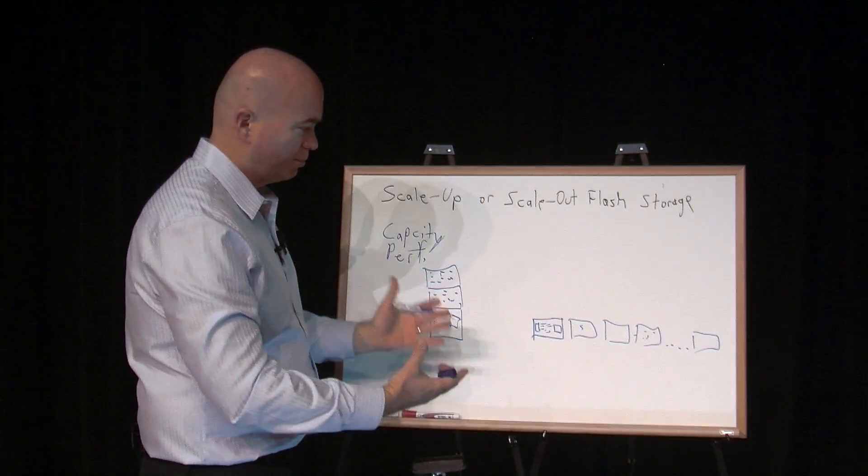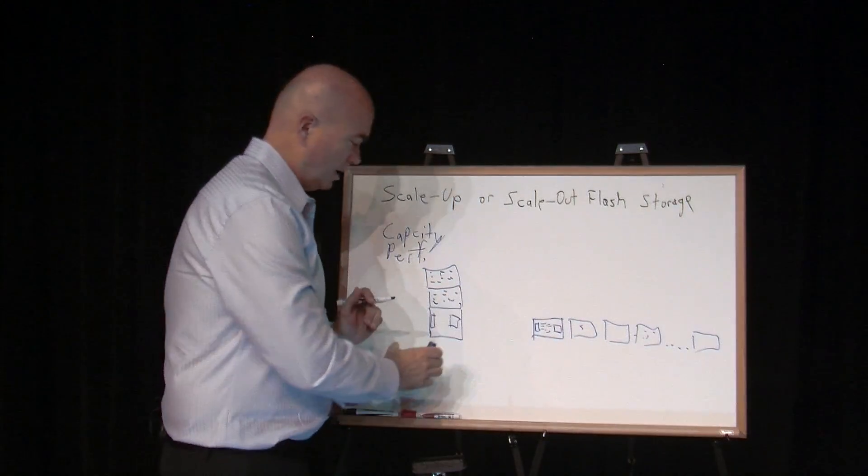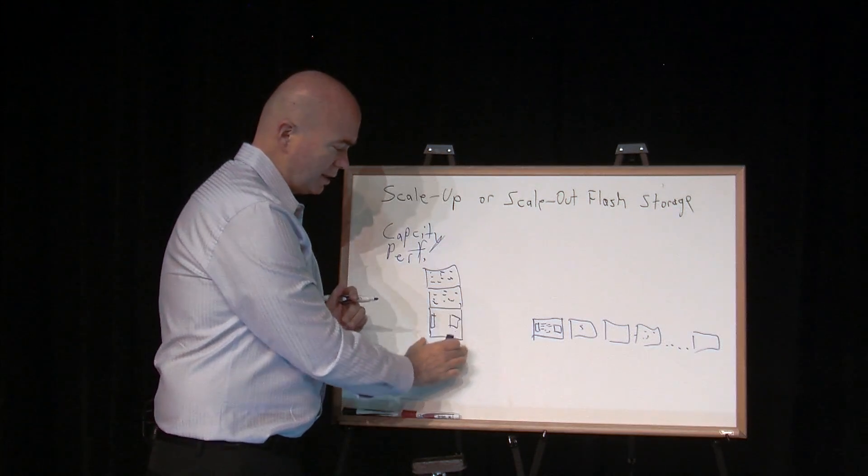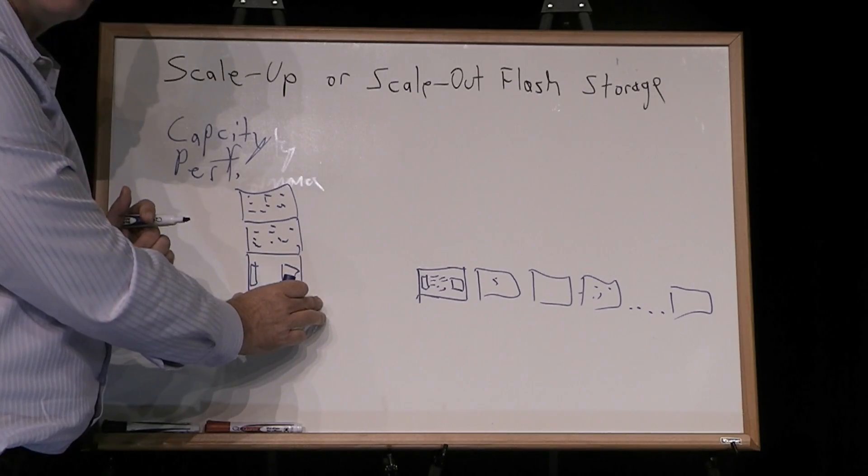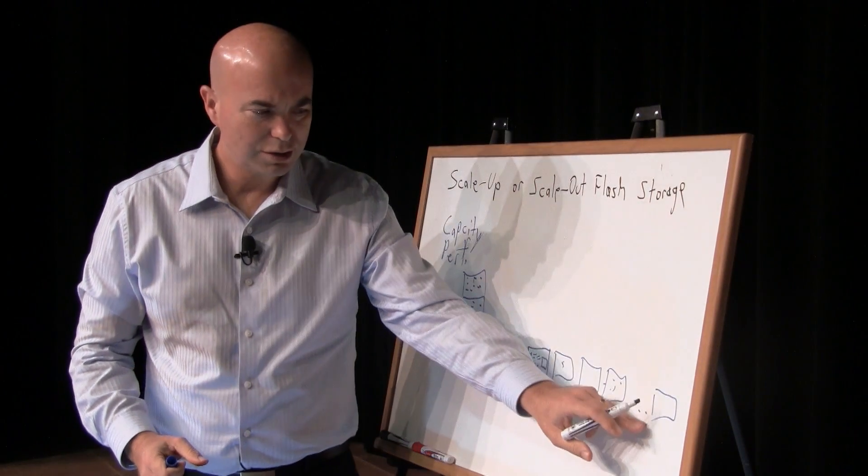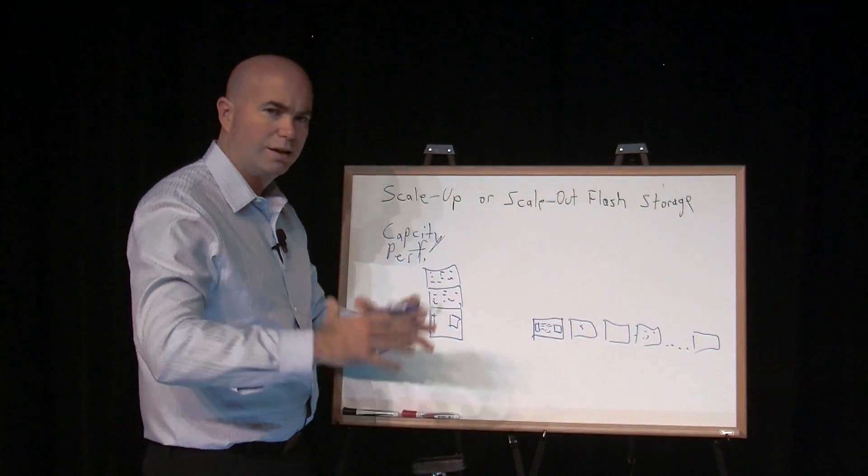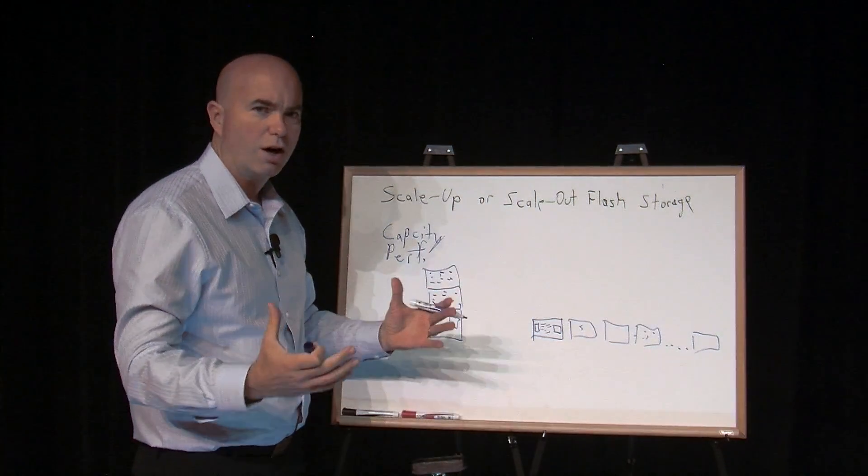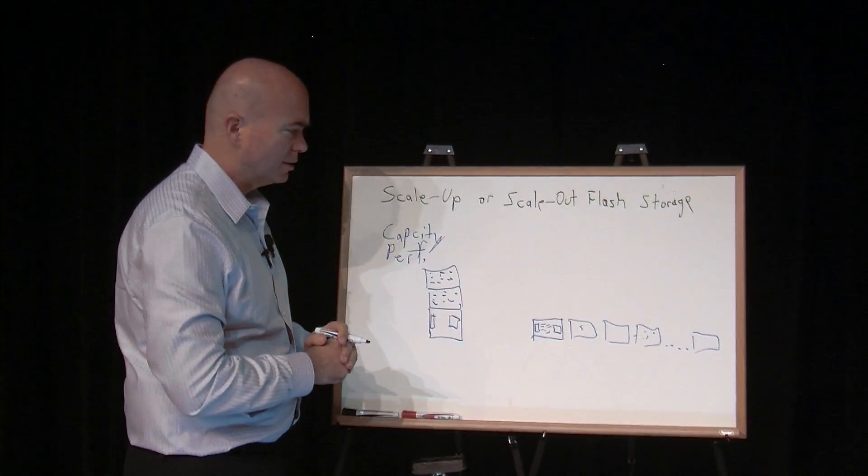Now the challenge is that in the all-flash use case, what we're seeing is that the performance today of this one box far exceeds the capability of most applications to be able to drive it. So the need to go to additional systems is really not as valuable as it would be in, say, a large storage use case like archiving, maybe a cloud storage environment, something like that.